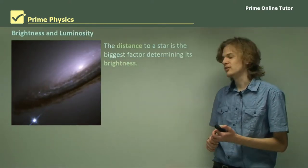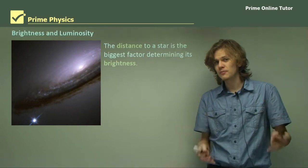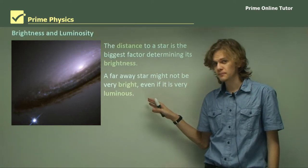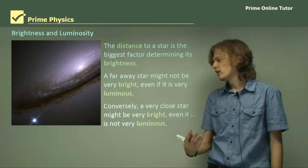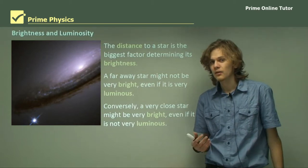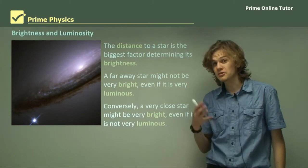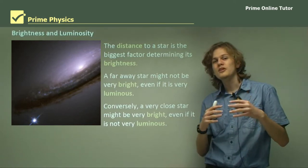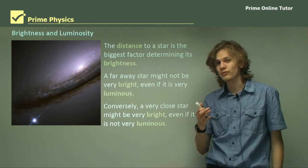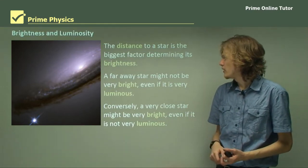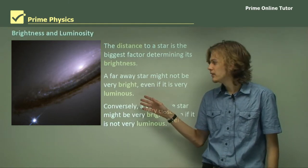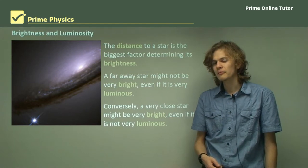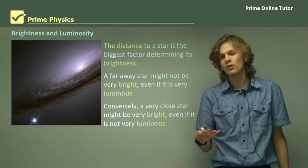The distance to a star is the biggest factor determining its brightness. A far away star might not be very bright, even if it's very luminous. Conversely, a very close star might be very bright, even if it's not particularly luminous. An example of this is our Sun. The Sun isn't particularly luminous in the grand scheme of things, but because it's so close to us, it appears much brighter than any other stars, outshining them all during daytime.